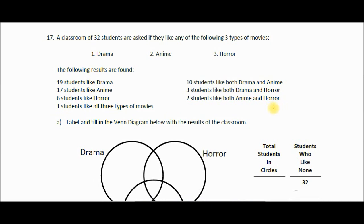A class of 32 students are asked if they like any of the following three types of movies — any one of them, all of them, two of them, or none of them. They could have picked any possible combination. The categories are drama, anime, and horror. The following results were found. The first question is to label and fill in the Venn diagram below with the results of the classroom.